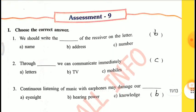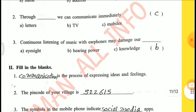Assessment 9 — Choose the correct answer. 1st one: We should write the dash of the receiver on the letter — B: Address. 2nd one: Through dash we can communicate immediately — C: Mobiles. 3rd one: Continuous listening of music with earphones may damage our dash — B: Hearing power.